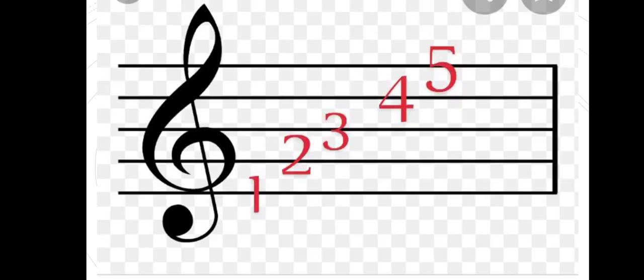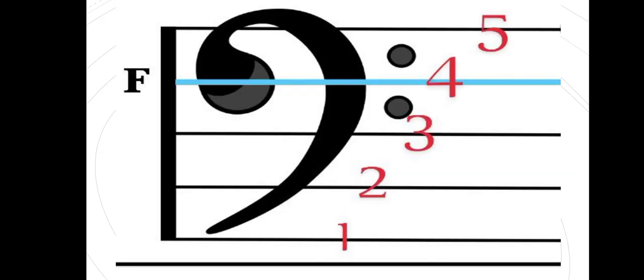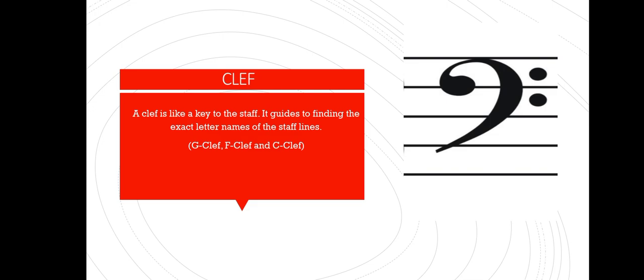Also, whether you are using the F clef, the G clef, or the C clef, the lines are still numbered the same way — one, two, three, four, and five from bottom going upwards. You cannot start from the top going downwards; if you do that, then you have it wrong. So let's continue and look at this term called 'clef.' Clef is an English term that comes from an Italian word called 'clavis.' In Italian, 'clavis' means key — like the opening of something. So the clef is like a key to the staff.